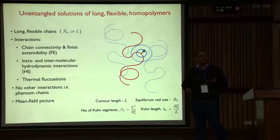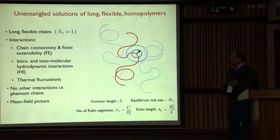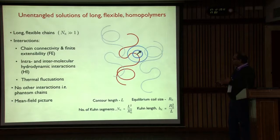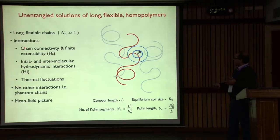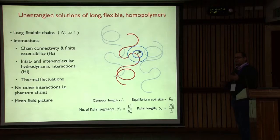More than shear thinning, since I'm talking about constitutive model building, the real question in these systems is what happens to hydrodynamic interactions between polymer molecules. I'm going to take the simplest system we can consider while keeping hydrodynamic interactions in: a polymer solution with a very long, flexible molecule with just chain connectivity, finite extensibility, intra- or intermolecular hydrodynamic interactions, and thermal fluctuations. All other interactions are thrown out for simplicity.